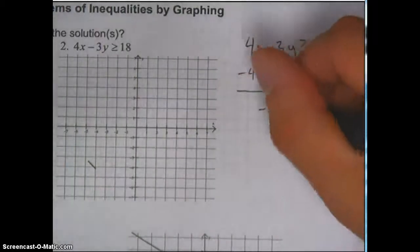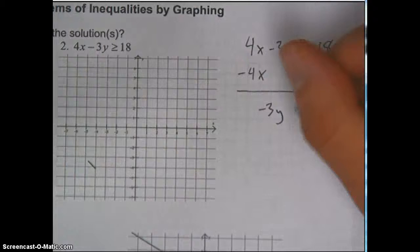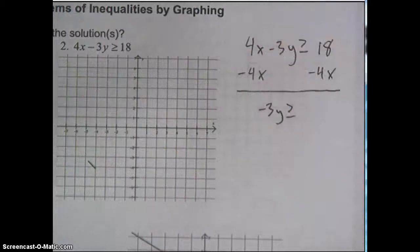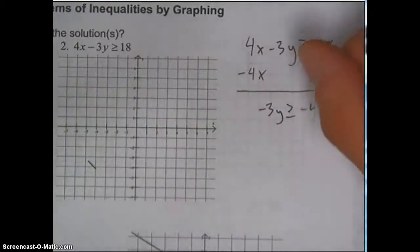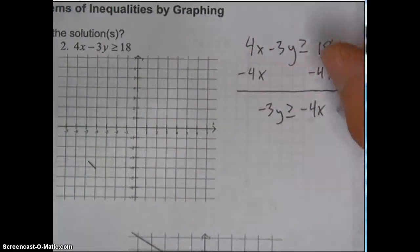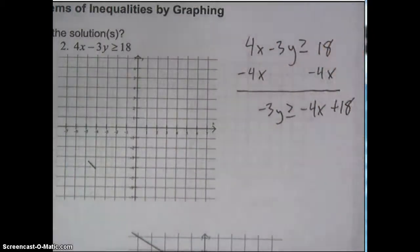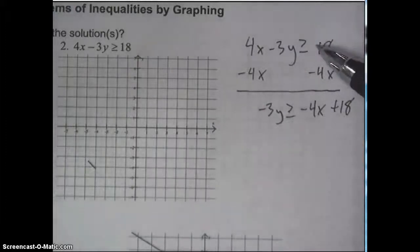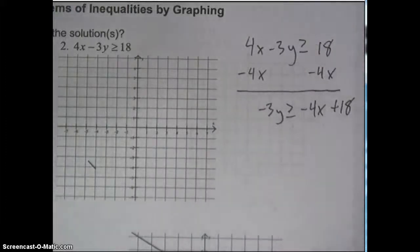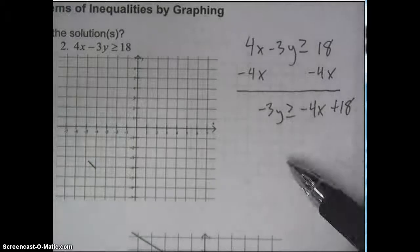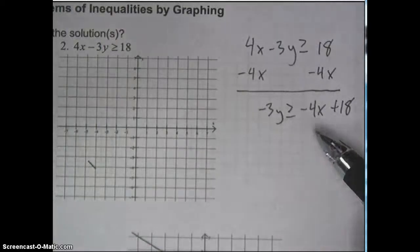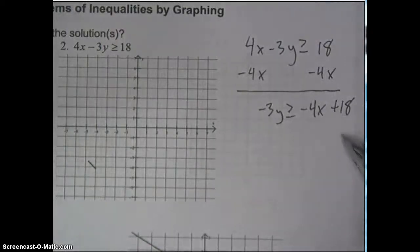I've got 4x minus 3y is greater than or equal to 18. First thing I want to do is subtract 4x, because I'm trying to get the y by itself — isolate the y. So I've got negative 3y is greater than or equal to negative 4x plus 18. I put the negative 4x on the left because I'm trying to get this into slope-intercept form, where usually the x is on the left and the constant on the right.